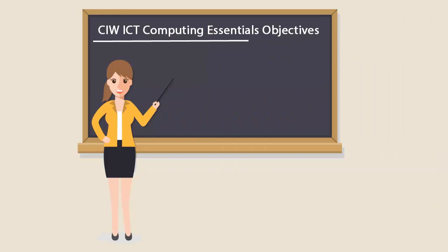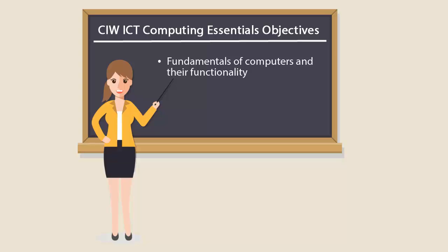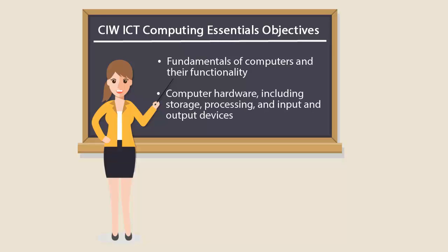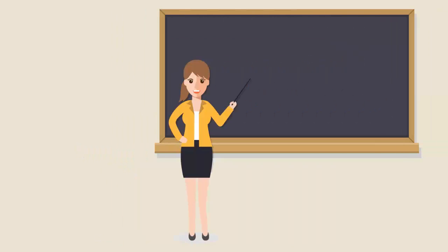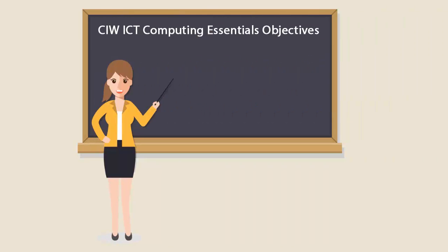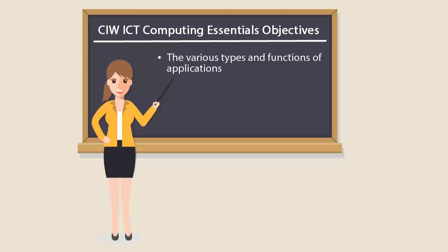CRWICT Computing Essentials focuses on the fundamentals of computers and their functionality, computer hardware including storage, processing, and input and output devices, the various types and functions of applications, including operating systems, user interfaces, and open source versus commercial licenses.